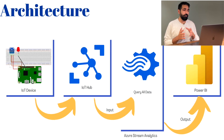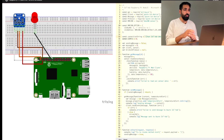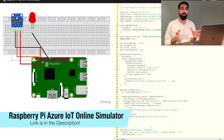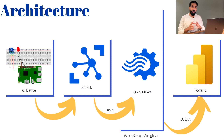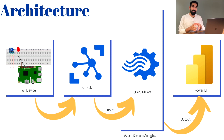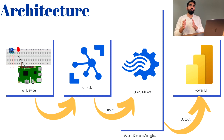Looking at the architecture: first we need an IoT device simulator — you can see on screen the sample simulator provided by Microsoft that we'll be using. Second, data flows via IoT Hub and Azure Stream Analytics. Finally, we display the data on our Power BI dashboard. Note that data coming into the Stream Analytics job from IoT Hub is your input, and once you query and aggregate the data and push it into a Power BI dataset, that is your output.